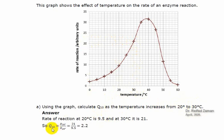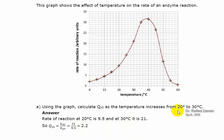So here is the formula applied. In this case, the final rate of reaction was 21 and the initial rate of reaction was 9.5. So between 20 to 30 degrees centigrade, the temperature coefficient was 2.2. This means that at 30 degrees centigrade, the reaction would proceed 2.2 times faster than the rate of reaction at 20 degrees centigrade.